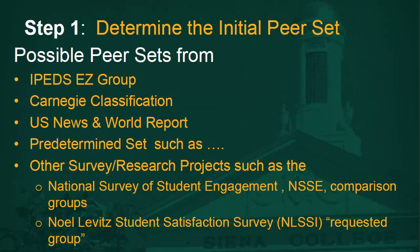Step 1: Determine the initial peer set. There are all sorts of locations you can go to find the initial peer set. These sites take information your institution has provided and give you a list based on criteria you provide, like enrollment size. These resources are IPEDS Easy Group, Carnegie Classifications, US News and World Report, predetermined sets of peers which can be based on geographic location, or other survey projects such as the National Survey of Student Engagement and Noel Levitz's Student Satisfaction Inventory.